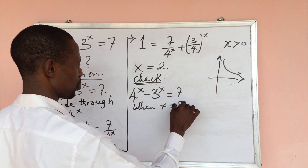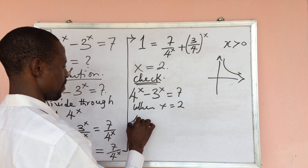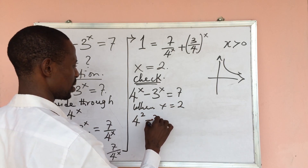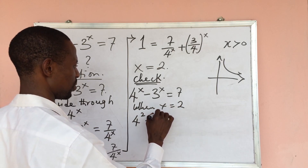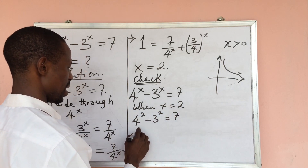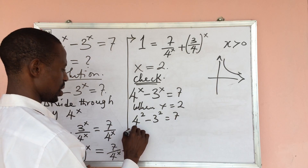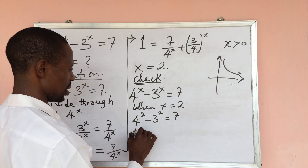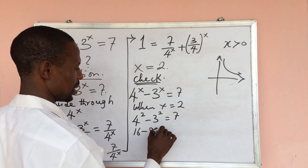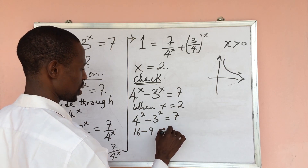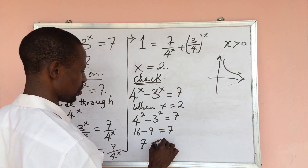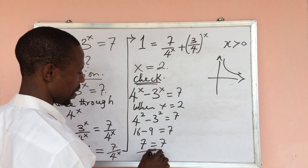When x equals 2, we get 4 to the power of 2 minus 3 to the power of 2 equals 7. This gives us 16 minus 9 equals 7 — and 16 minus 9 does indeed give us 7 equals 7. Verified!